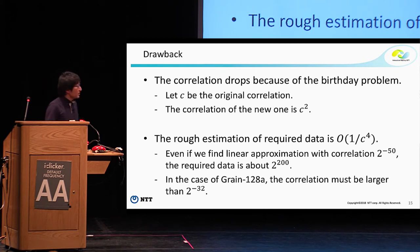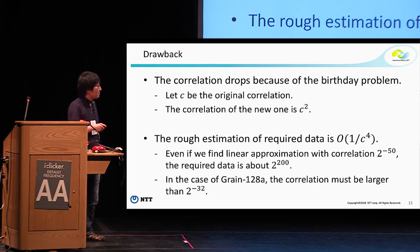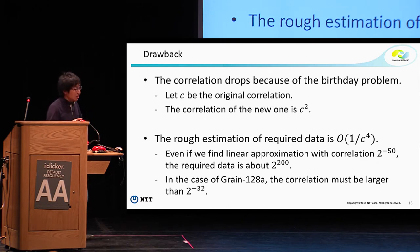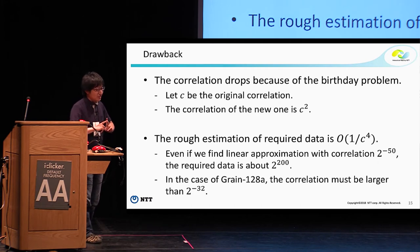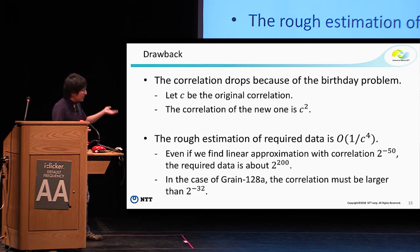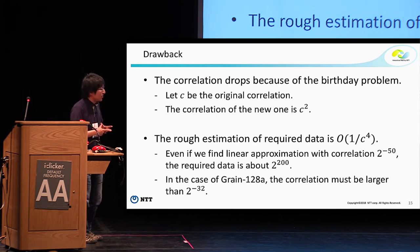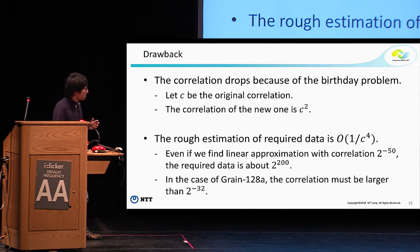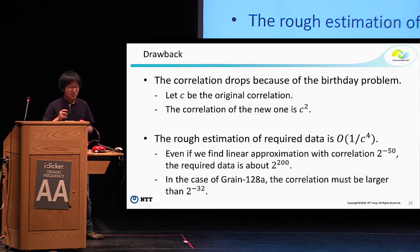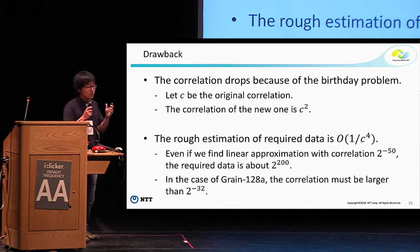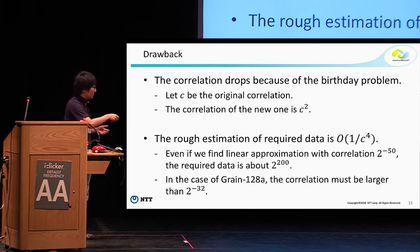However, this procedure has a drawback: the correlation drops due to the birthday paradox problem. By XORing two vectors, the correlation drops to c squared. The rough estimation for required data complexity is order 1 over c^2 to the 4. So even if we can find linear approximations with correlation 2^{-50}, the required data is about 2^{200}. If the security level is 128-bit, even finding such linear approximations is meaningless.